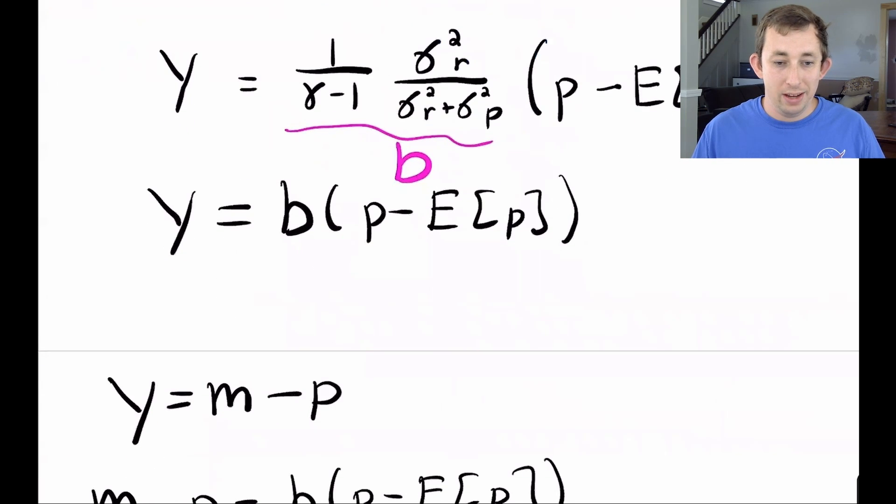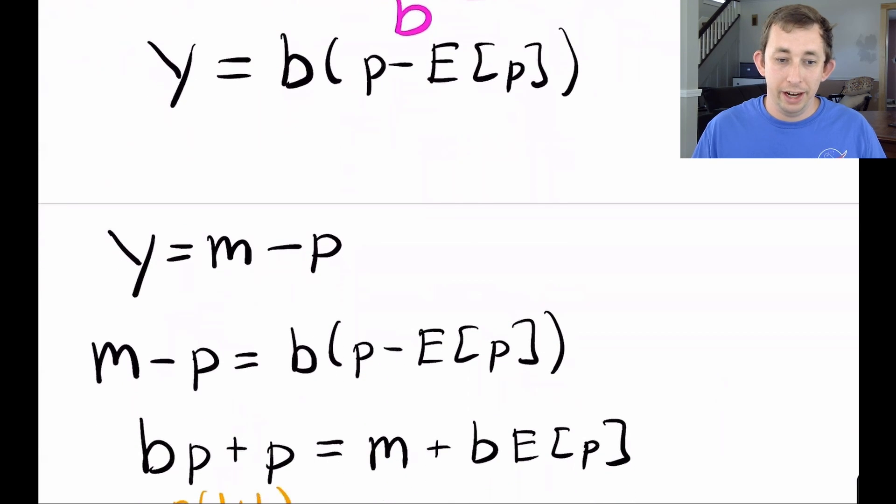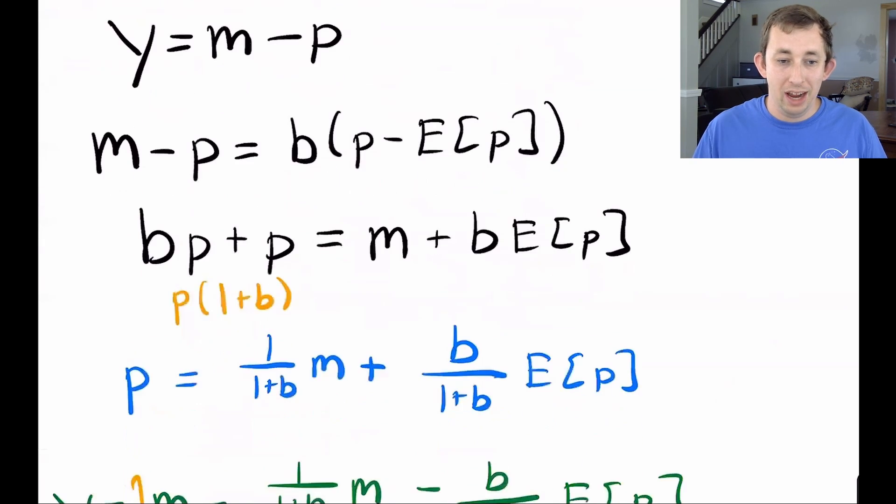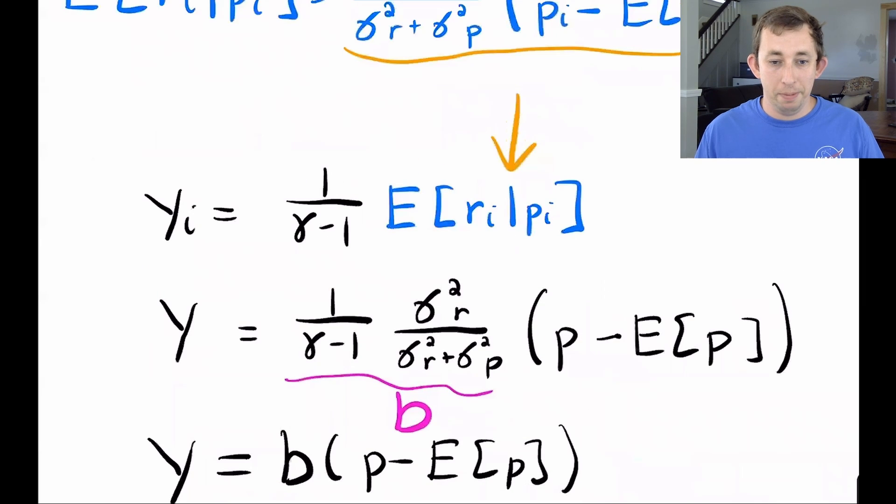Now I'm going to plug that back into our first order condition for y, I'm going to get this even messier equation. To make it a little easier to read and a little simpler, I'm going to call this whole thing b. So now I just have little y is equal to b times p minus the expected value of p. I also know that y equals m minus p again from before. So that means that m minus p must be equal to that whole thing. And all I'm going to do is solve this new equation here for p.